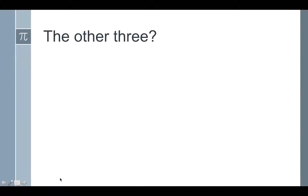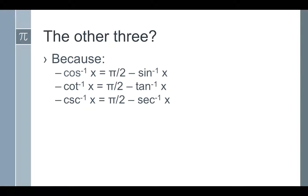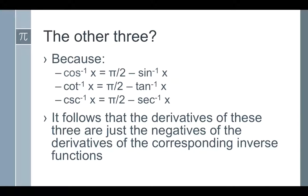Notice we did sine, not cosine; tangent, not cotangent; secant, not cosecant. The reason is we get a very nice identity — the other derivatives are just the opposites of those three. The derivative of cosine inverse is just the opposite of sine inverse. The derivative of cotangent inverse is just the opposite of tangent inverse. And likewise, the derivative of cosecant inverse is the opposite of the derivative of secant inverse.